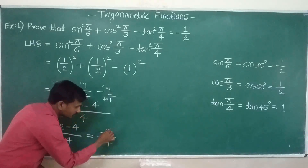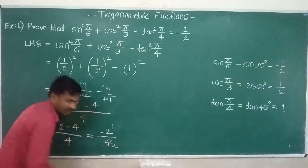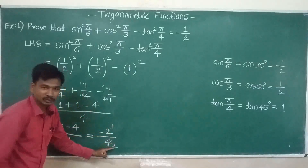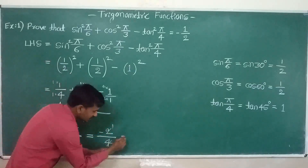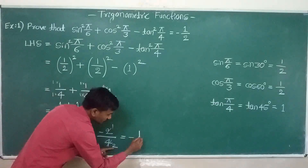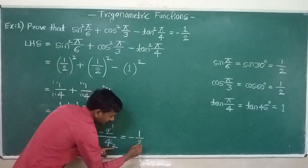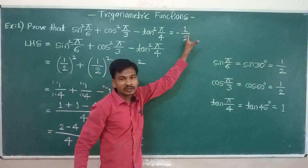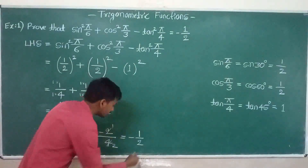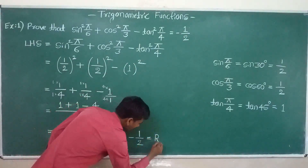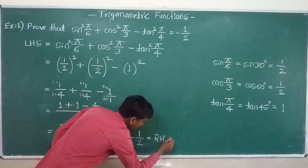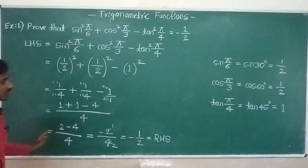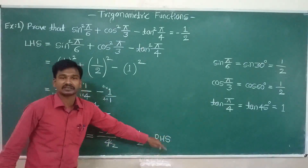Simplifying: minus 2 divided by 4 — 2 cancels — equals minus 1 divided by 2. Therefore this is equal to minus 1 divided by 2, which is the RHS. So LHS is equal to RHS. Hence proved.